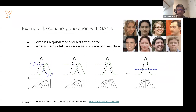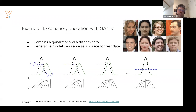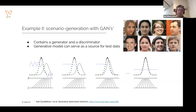The second example I'd like to discuss is using machine learning to improve efficiencies through scenario generation. It's very often important to quickly generate good scenarios — for instance, to understand under what conditions models fail, but also to perform stress testing. Being able to quickly generate realistic scenarios is often a challenge. There are two families of machine learning algorithms for this type of task: one is what we call variational autoencoders, and the other is what we call GANs, or Generative Adversarial Networks.